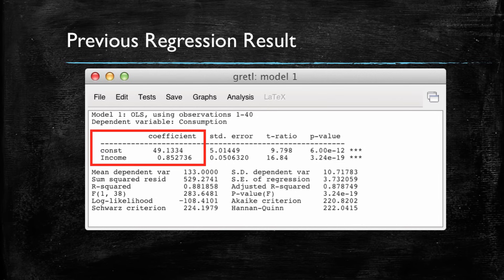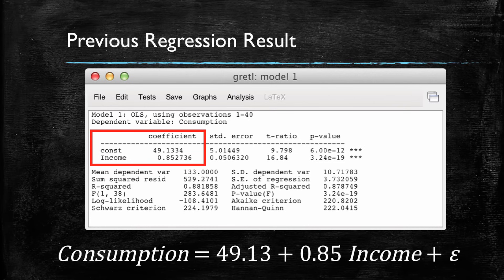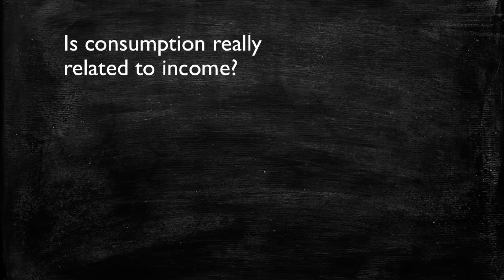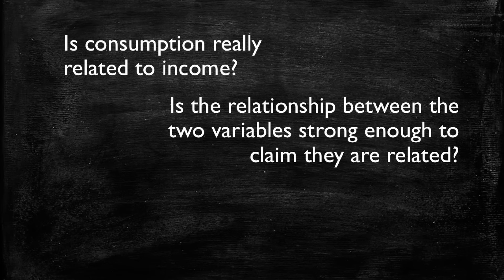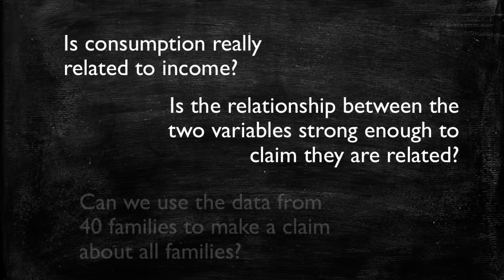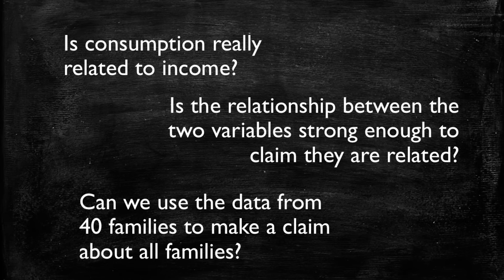Let's recap our previous example. We were regressing consumption on income, trying to explain different levels of consumption by families based on their weekly income. Our coefficients were 49.13 for the intercept and 0.85 for the slope, implying that for every dollar increase in income, consumption would increment by 0.85 or 85 cents. This begs the question: is consumption really related to income? We're working with a sample of 40 families — does it make sense to use an estimate based on just 40 families for the relationship across the entire population?